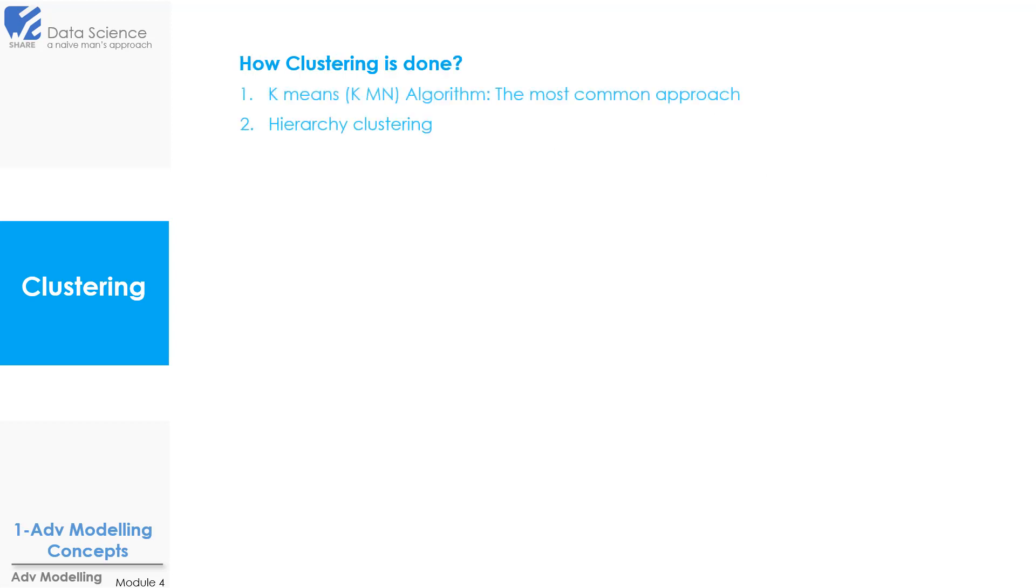Now there are two methods of clustering. First is K means algorithm, it is the most common approach, and then second is hierarchical clustering. So let's start with K means algorithm.